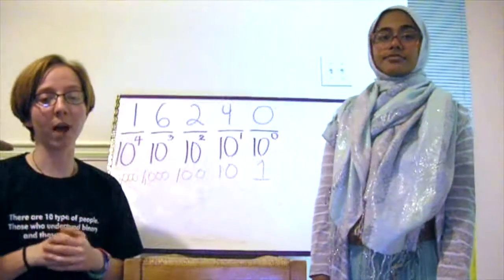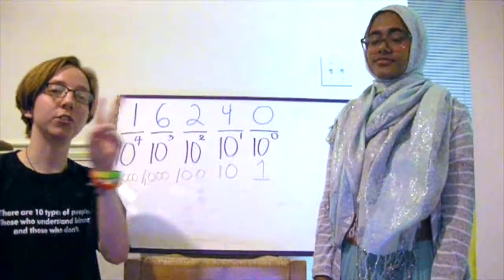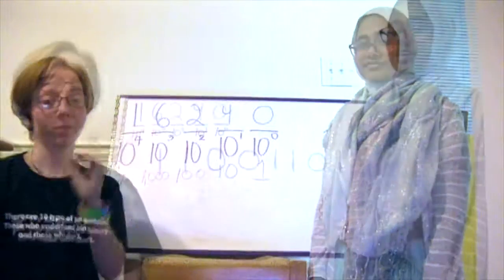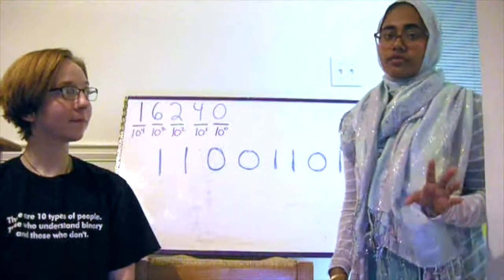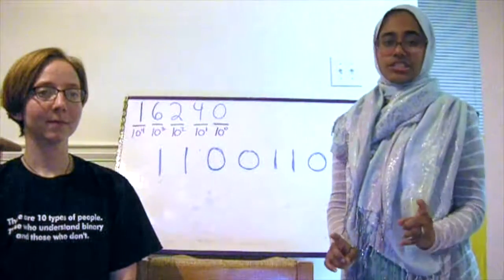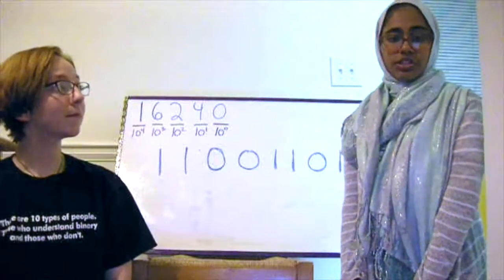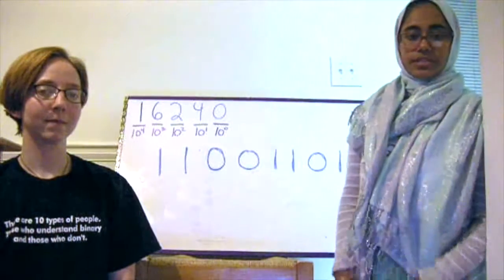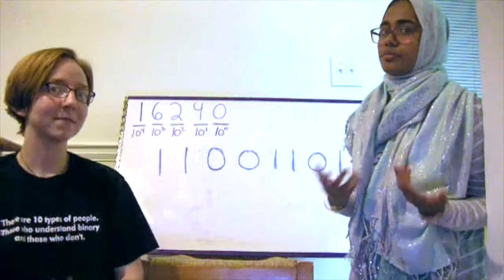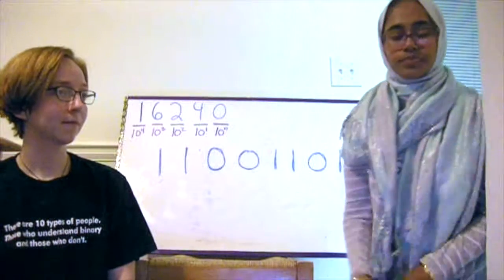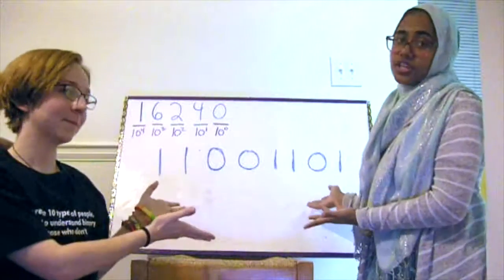In binary, or base 2, we count things in groups of 2. Instead of having 10 numbers, 0 through 9, we have two numbers, namely 0 and 1. Counting in binary is useful for many applications in electronics and programming. For example, in digital electronics, a system of 1s and 0s is used to indicate the presence of current through a particular component in a circuit. This is used to create gates in digital circuits. But staring at a number in binary doesn't actually mean that much to us, so we are going to teach you how to make sense of this by converting it into decimal.